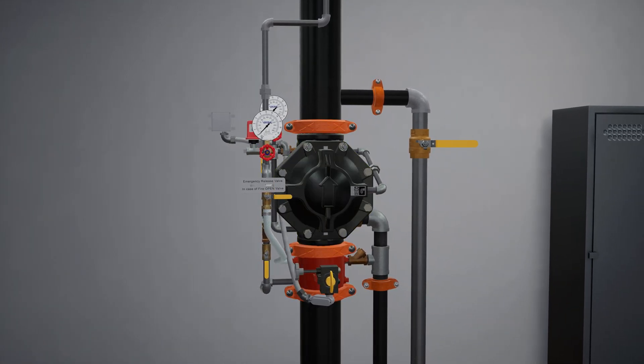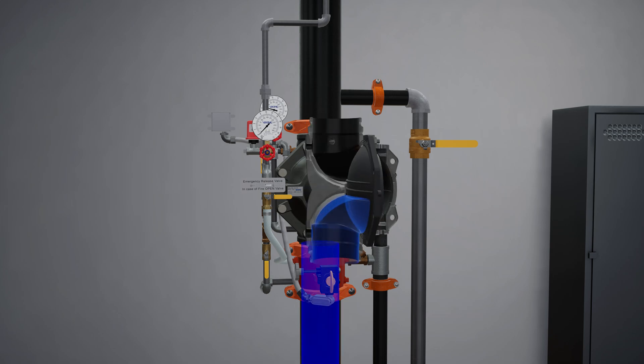The VXD Deluge Valve is a flood valve with only one moving mechanism. The valve is held closed by priming water pressure trapped in the priming chamber. This keeps the outlet chamber and the system piping empty.